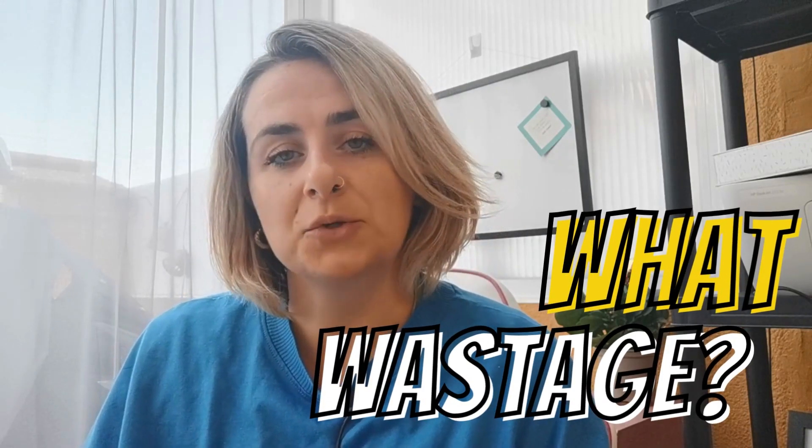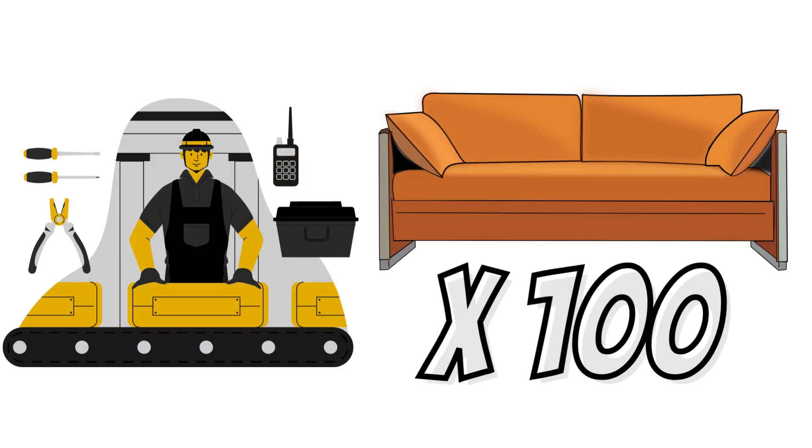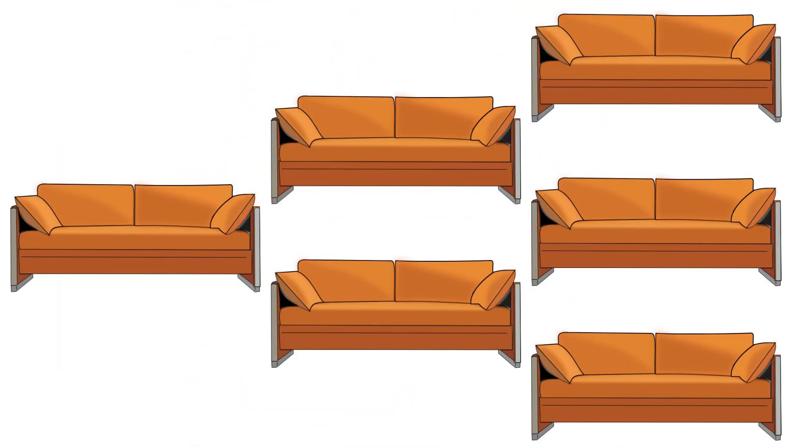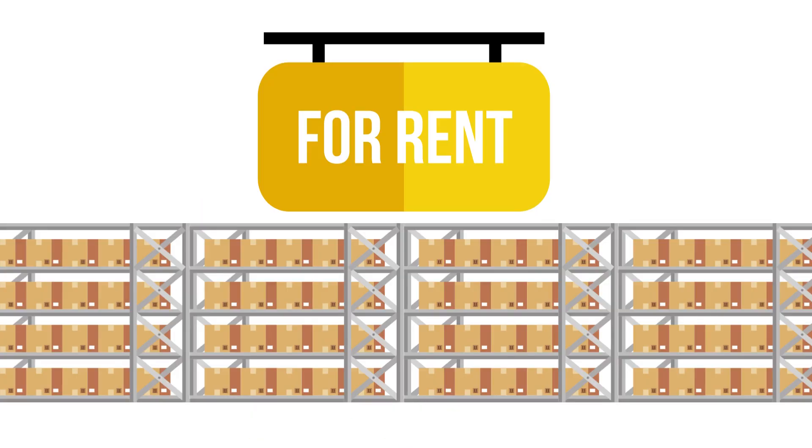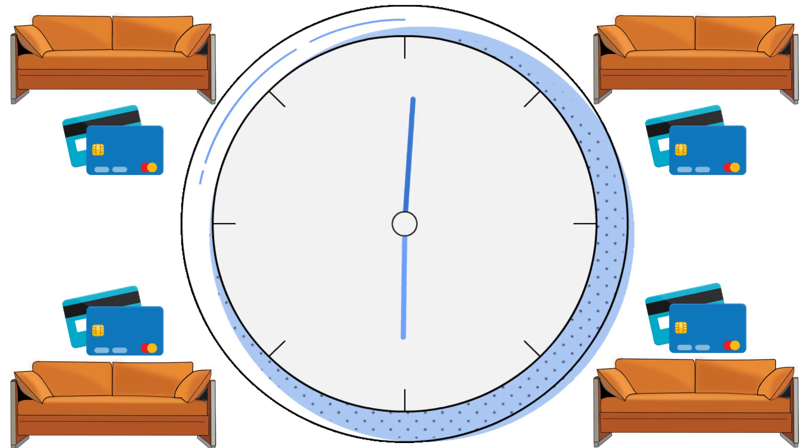Doing it in this way saves a lot of wastage. But what wastage are we actually talking about? Let's take that same product but not use the JIT system. The manufacturer produces 100 sofas. These sofas have a large upfront cost in materials. Once produced, they will need to be stored at more cost of paying out for rental space, all while the company waits for the purchases to be made.